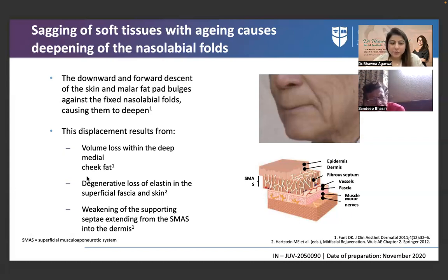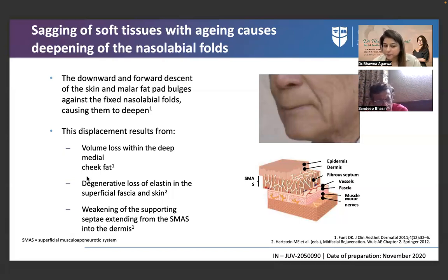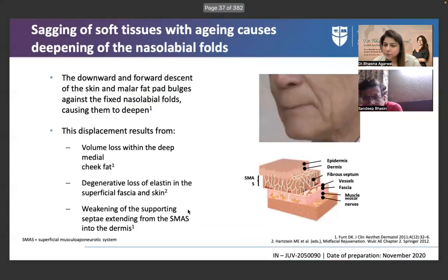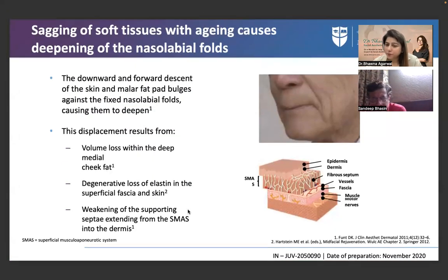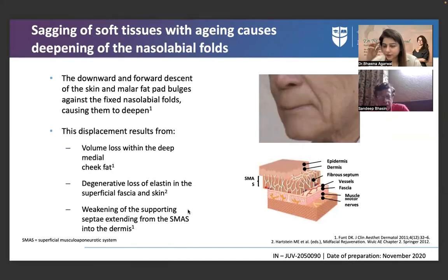Displacement results from volume loss within the deep medial cheek fat pad, degenerative loss of elastin in fascia and skin, and weakening of supporting septa extending from SMAS into the dermis. There is loss in the deep fat and changes in skin integrity — collagen mass weakens, elastin reduces.